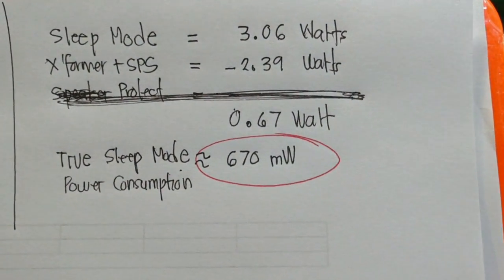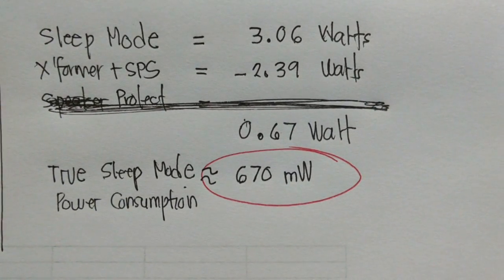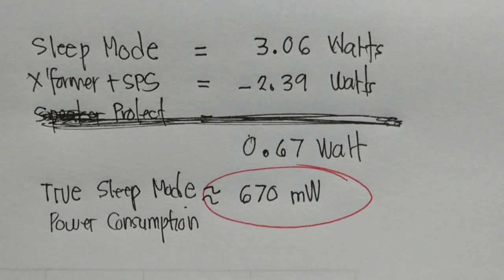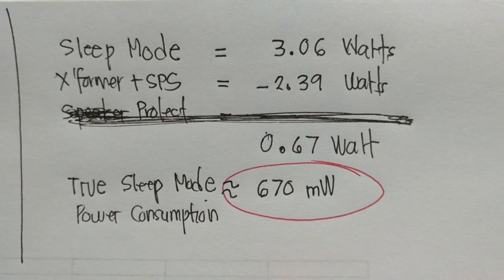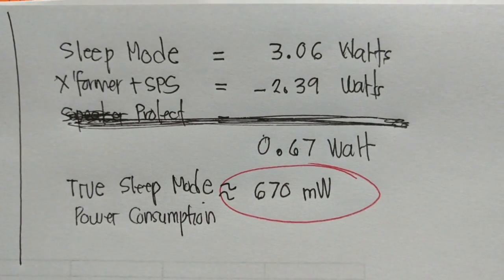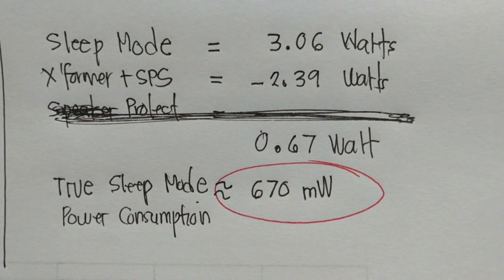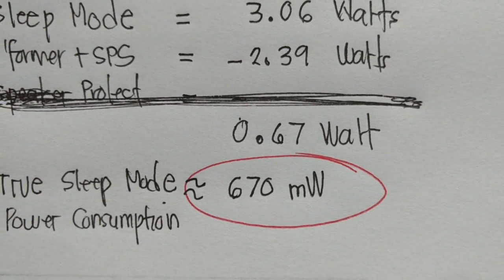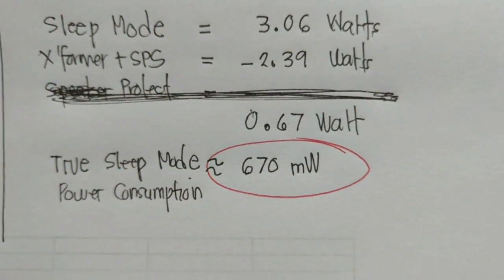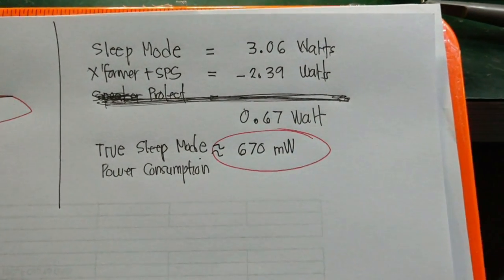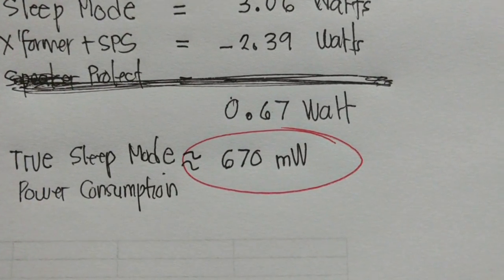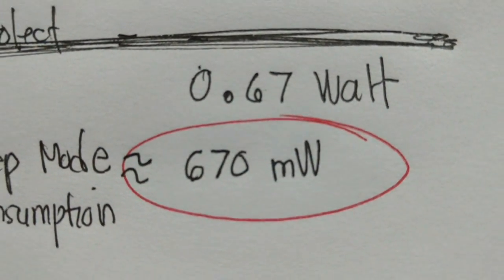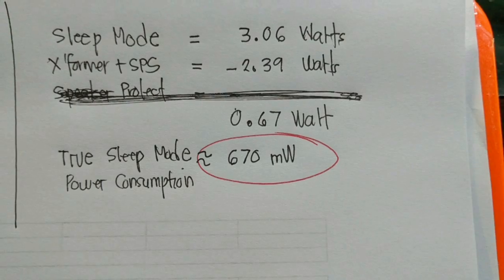Similarly, if we apply the same method with the sleep mode, we rate 3.06 Watts and the transformer SPS power consumption is 2.39. Then we get 0.67 Watts. So we can say now that the Class D amplifier is consuming 670 milliwatt while in the sleep mode.